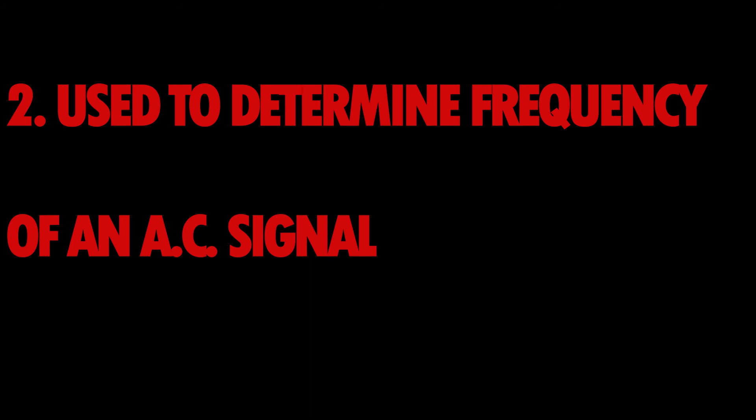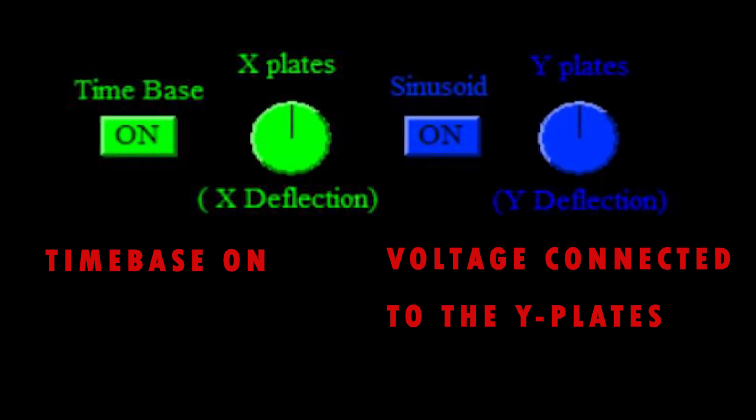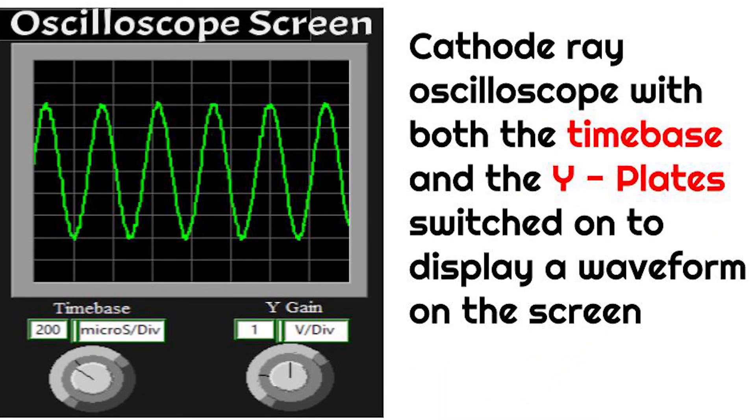The second use of the cathode ray oscilloscope is the determination of frequency of AC signals. To determine the frequency of an AC signal, the AC signal is connected to the Y plates with the time base setting on. Remember, when both X plates, that is a time base, and the Y plates are switched on at the same time, the cathode ray oscilloscope will display a waveform on the screen.